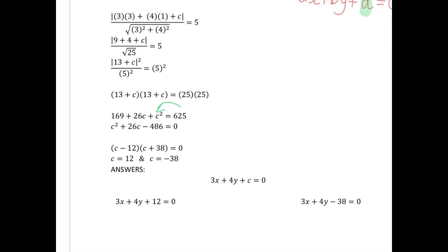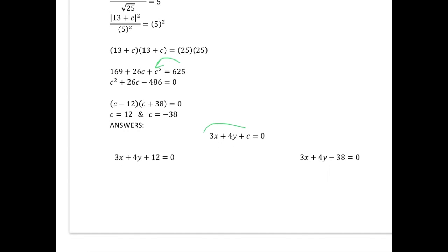So then we look back, we had our general equation where c was unknown, but now we have two answers for c, so we just fill those in. And if c is 12, we have this answer here, and if c is minus 38, we have this answer over here. So our two answers are 3x plus 4y plus 12 equals 0, and 3x plus 4y minus 38 equals 0.